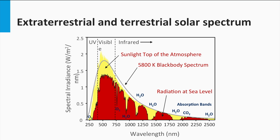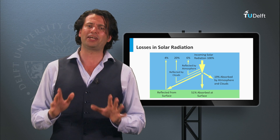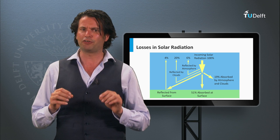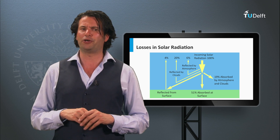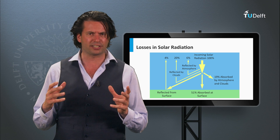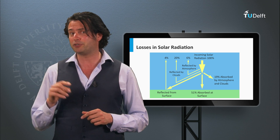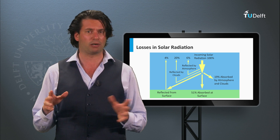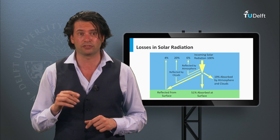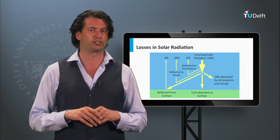These molecules take big bites out of the spectrum, meaning the total power density arriving at the surface depends on the absorption path length of the light traveling through the atmosphere. On average, around 20% of the solar irradiation is reflected by clouds, 6% by the molecules in the atmosphere, and 4% by the Earth's surface, so in total 30% is lost due to reflection. 19% of the irradiation is lost due to absorption by clouds, particles, and molecules in the atmosphere, while 51% of the irradiation is absorbed at the Earth's surface.